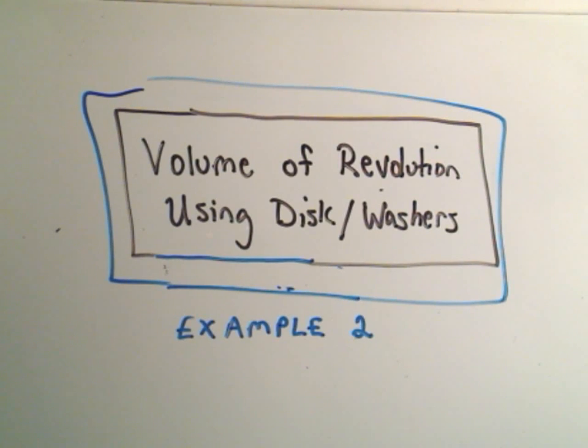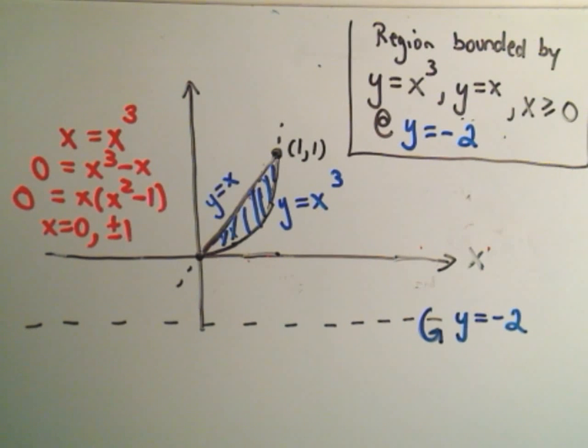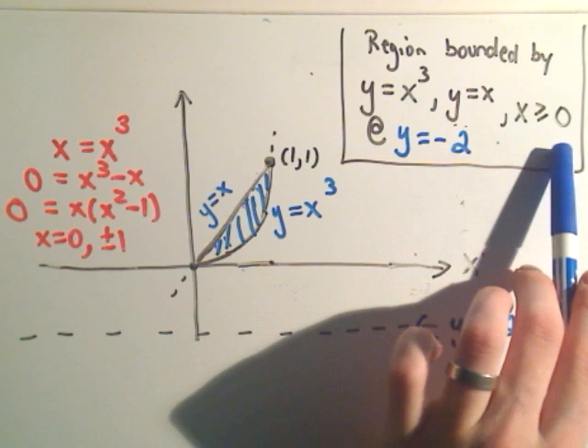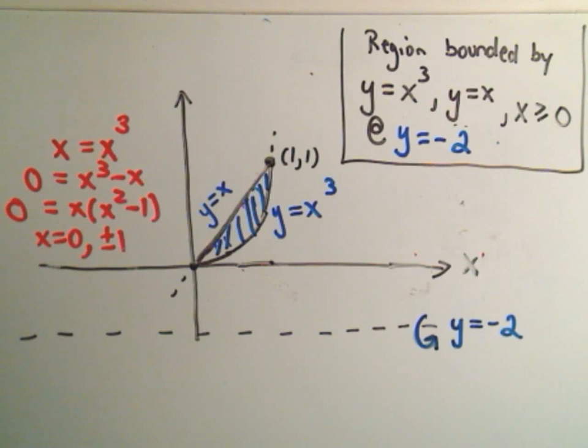In this one I want to do just a slight variation on my first problem. We're again going to use the disk washer method to calculate a volume of revolution. So the region's the same: y equals x cubed, y equals x, x greater than or equal to 0. This time though we're going to rotate it about the line y equals negative 2.